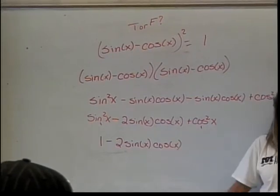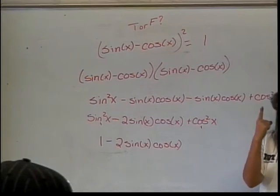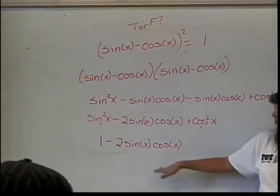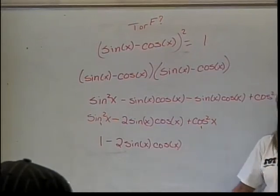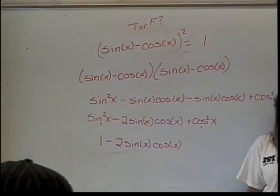It needs to be 0 all the time. Can you think of one example for an x when I plug in and get sine of x and cosine of x? If I multiply them together and multiply that by 2, I will not have 0. All I need is 1. All I need is 1. One example.